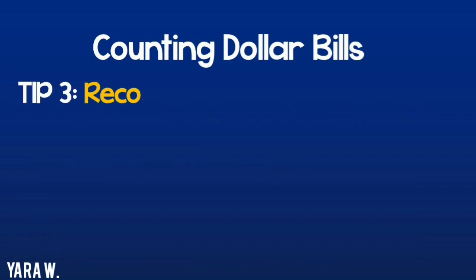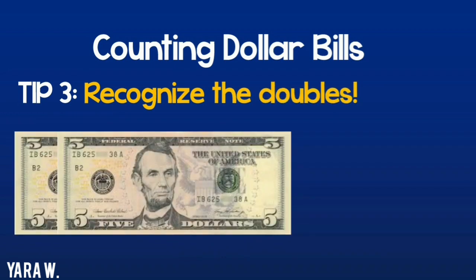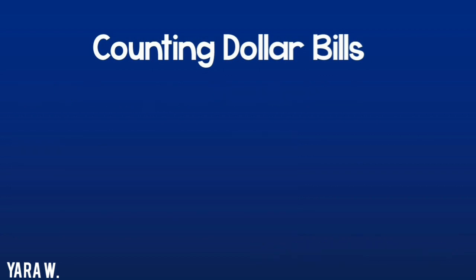Tip number 3. Recognize the doubles. If I have two $5 bills, that is obviously equal to $10. Now I can skip count by 10.